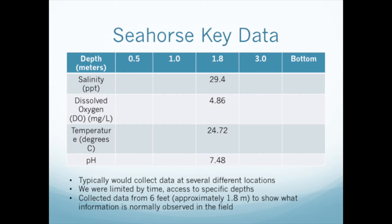These factors are important because they provide more information on the state of the water where phytoplankton samples are coming from. For example, if there was a bloom of a certain species — like if a red tide occurred — it could be beneficial to know what each of these values were to determine if they could be playing a role in why the bloom occurred. This could also help with future studies, because if one or more of these factors were found to be contributing to a bloom, scientists may be able to predict when one would occur in the future.